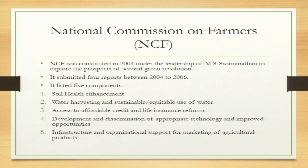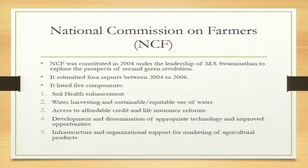The government recognized these problems and constituted the National Commission on Farmers (NCF) in 2004 to study the possibility of a second green revolution — one that would reach beyond Punjab to other parts of the country. Led by MS Swaminathan, it is also called the Swaminathan Commission. The commission submitted four reports between 2004 and 2006.